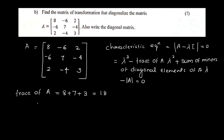Next, we compute the sum of minors of diagonal elements. This involves cofactors A11, A22, and A33.